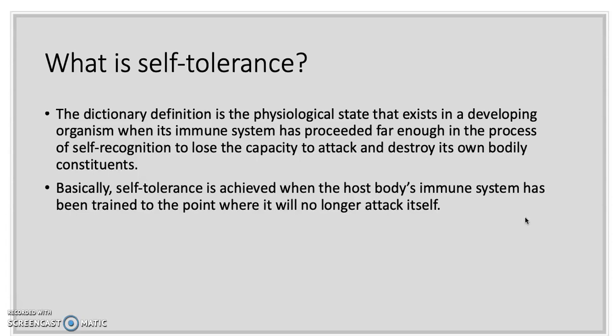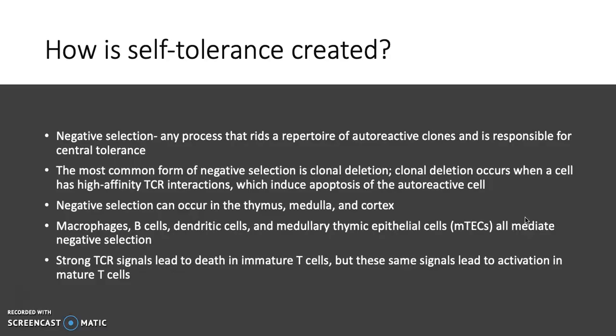The body uses many ways to train the immune system, and we'll get into this. So how is self-tolerance created? A large part of the creation of self-tolerance is negative selection, and negative selection is any process that rids a repertoire of autoreactive clones and is responsible for central tolerance.